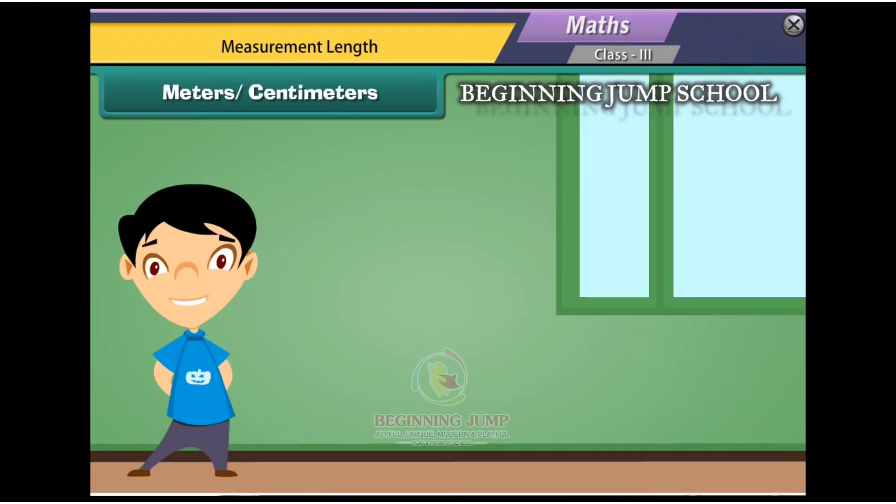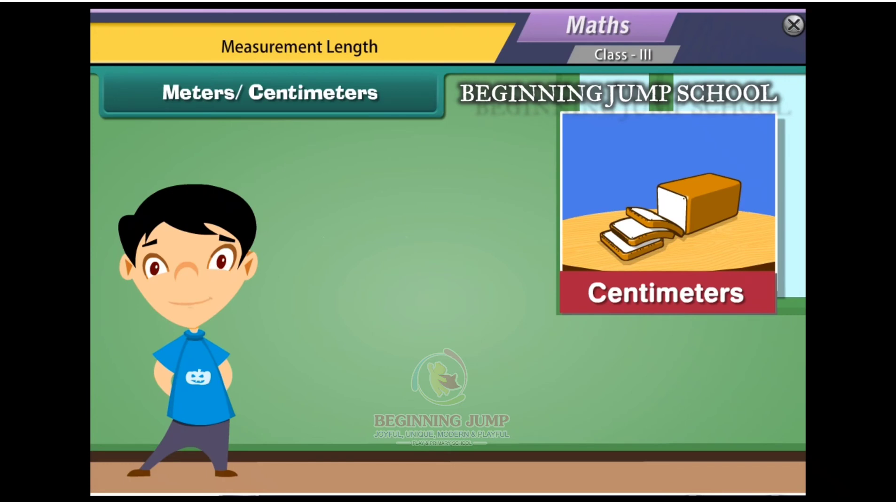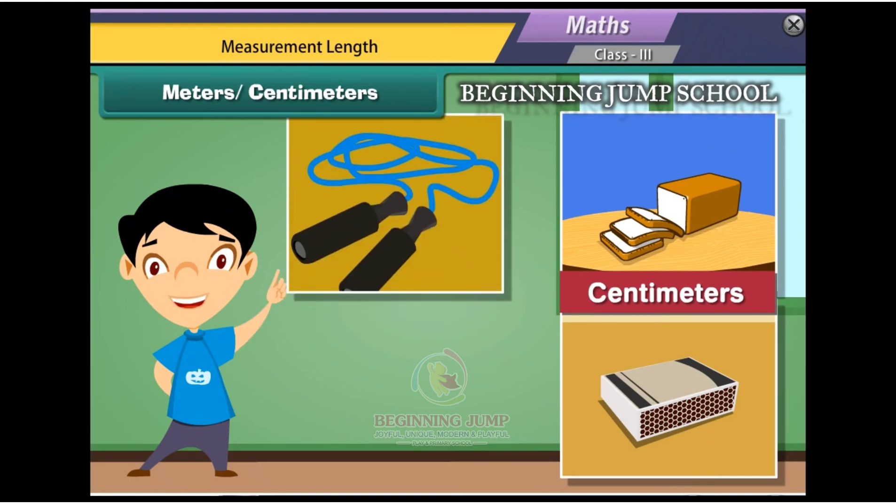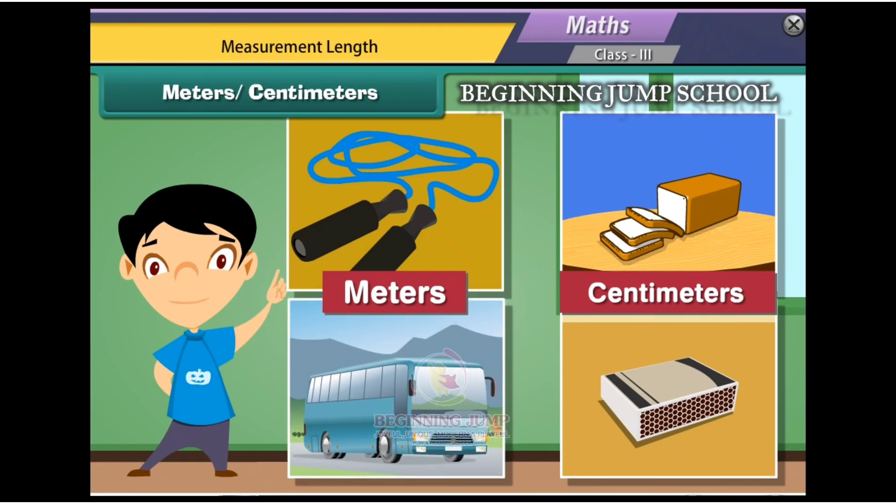Let us compare the length of various things. Some of the objects have their length in meters, while some of them are so small that they are measured in centimeters only. Length of a bread loaf is expressed in centimeters. The length of a match box is expressed in centimeters. The length of a skipping rope is expressed in meters. The length of a bus is expressed in meters.